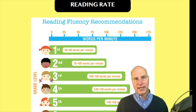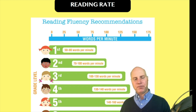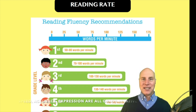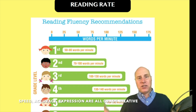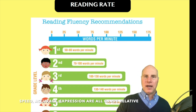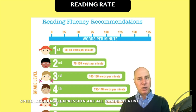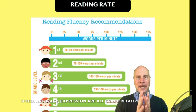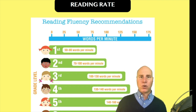When we say fluency — the ability to read with proper speed, accuracy, and expression — that first one, speed, is grade-relative. It's relative to where the student is in their grade and in the school year, meaning a student at the beginning of third grade might have a different reading rate than a student at the end or middle of third grade. So this is always going to be a relative score.